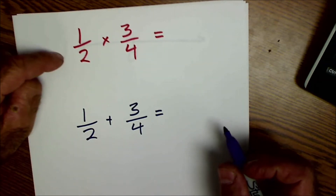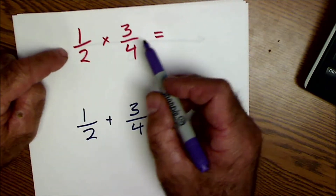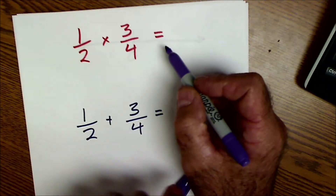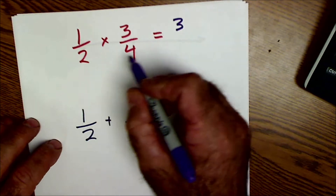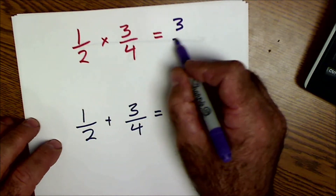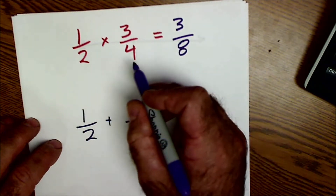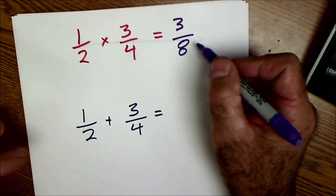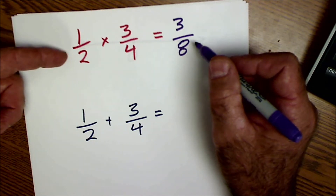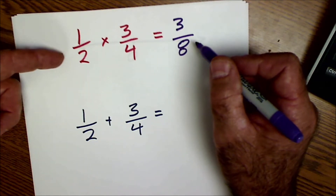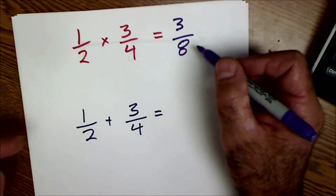Multiplication is easy — you just multiply across the top and multiply across the bottom. One times three is three, two times four is eight, so one half times three fourths is three eighths. That even makes sense because what I'm saying is: what is half of three quarters? Well, it's three eighths.